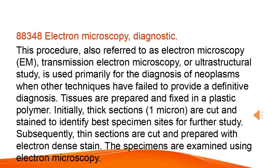This procedure, also referred to as electron microscopy (EM), transmission electron microscopy, or ultrastructural study, is used primarily for the diagnosis of neoplasms when other techniques have failed to provide a definitive diagnosis. Tissues are prepared and fixed in a plastic polymer. Initially, thick sections (1 micron) are cut and stained to identify the best specimen sites for further study. Subsequently, thin sections are cut and prepared with electron-dense stain. The specimens are examined using electron microscopy.